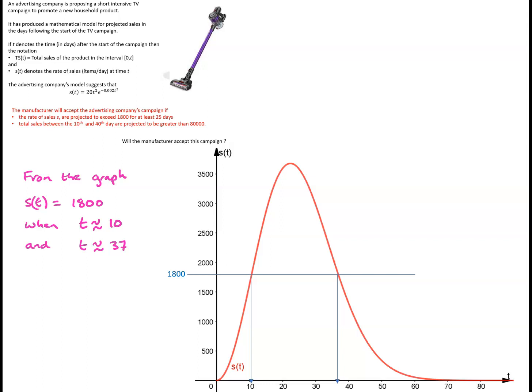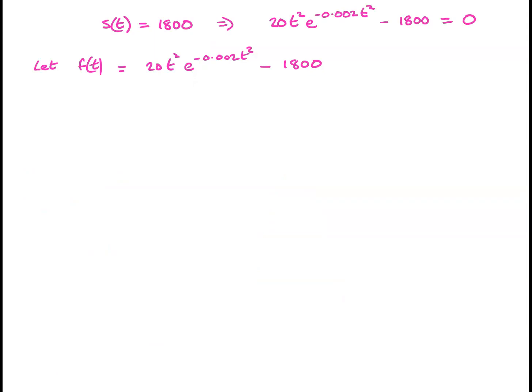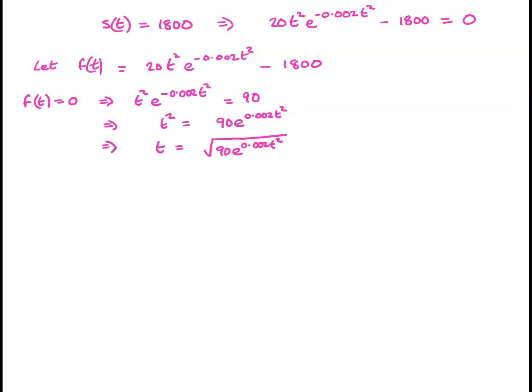We can verify these results by solving the equation s(t) equals 1,800 using numerical methods. If we want s(t) to equal 1,800, that means we want 20t² × e to the minus 0.002t² minus 1,800 to equal 0. So let f(t) = 20t² e to the minus 0.002t² minus 1,800. The equation f(t) = 0 can be rewritten as t² e to the minus 0.002t² = 90, or t² = 90 e to the 0.002t², or t = the square root of 90 e to the minus 0.002t².